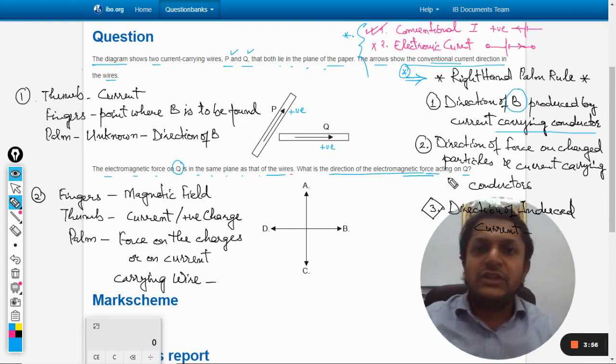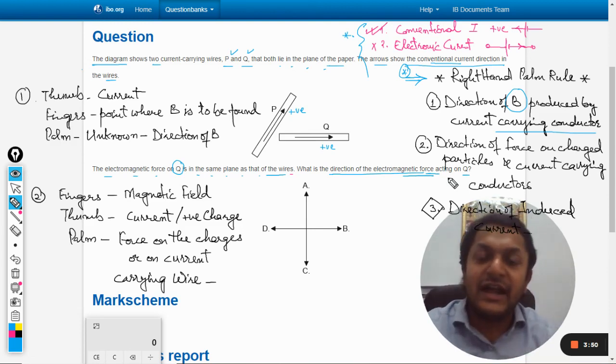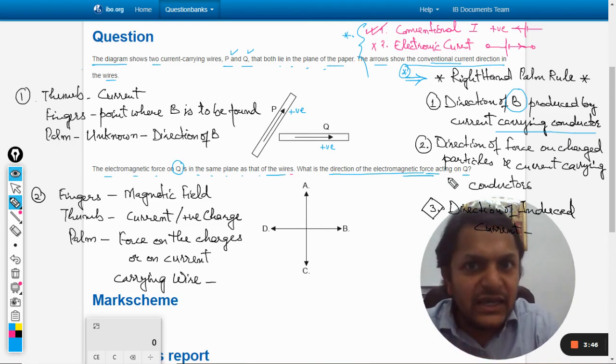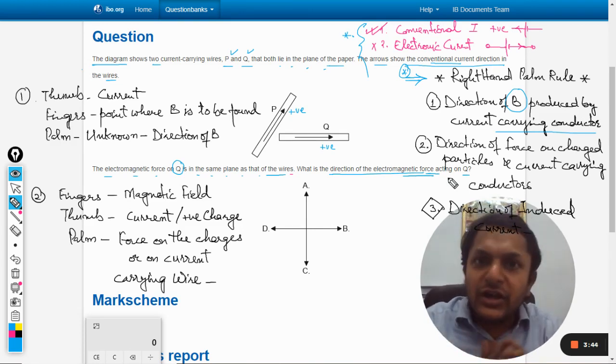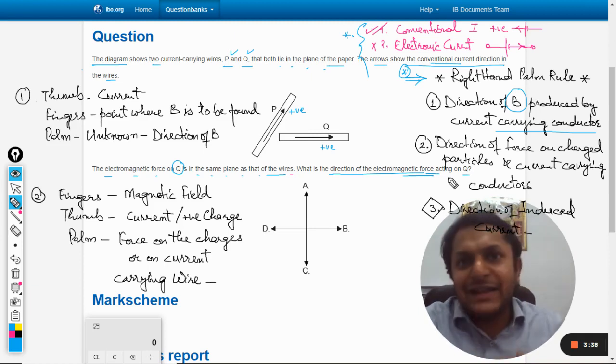In this question, there are two different phenomena taking place. The first phenomenon is there is a magnetic field that is being produced by wire P in which the current is flowing. So the current in wire P can be taken to be the source current, the current which is a source of magnetic field which is creating a magnetic field.